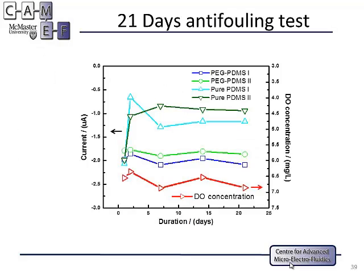This is a lifetime test of the sensor. The dissolved oxygen concentration read from the right-hand axis is from a commercially available optical sensor — ideally we want our sensor to follow the same trend. If we cover the electrode with pure PDMS, the signal intensity is lost within one day. However, if we cover it with PEG-grafted PDMS, the sensor maintains its sensitivity after 21 days, even in the accelerated biofouling environment.